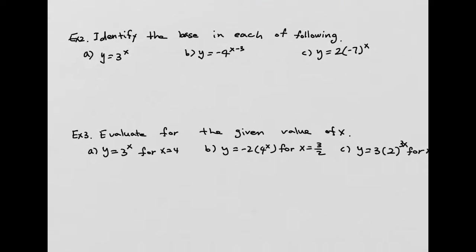Let's look at Example 2. Example 2 is asking you to identify the base. Your base is going to be the bottom of your exponent. In this case, your base is going to be 3. For the next one, your base is going to be 4, not negative 4 — because the exponent is only applying to 4, not the sign.